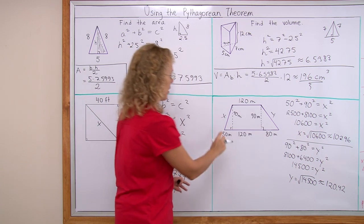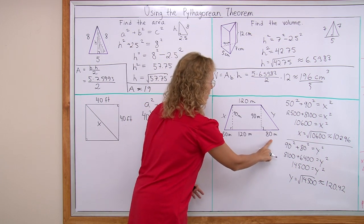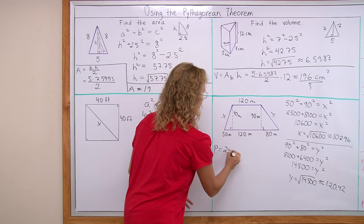You add all those side lengths. There's 50 and 120 and 80, so that makes 250 right there.